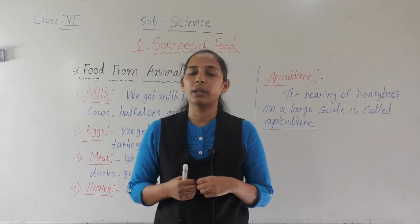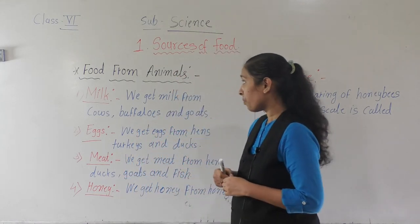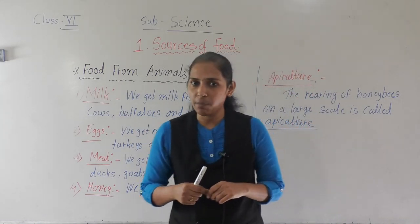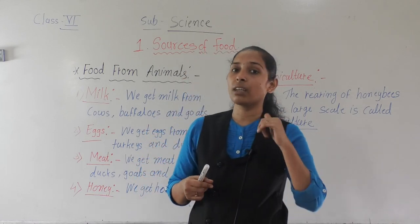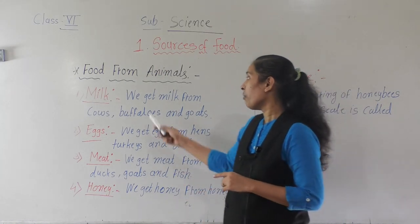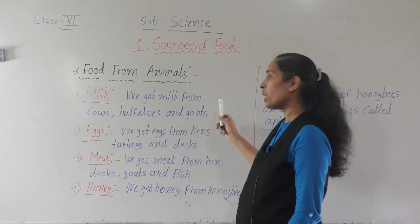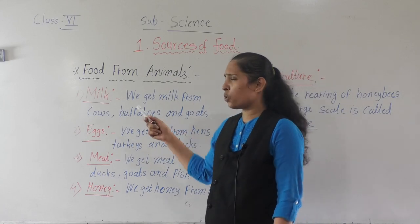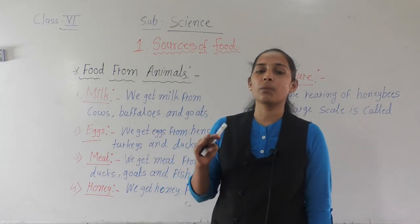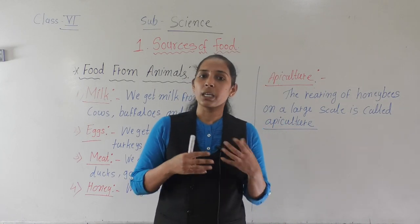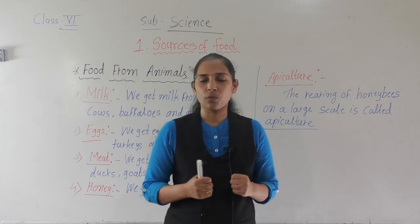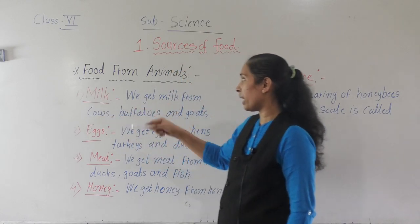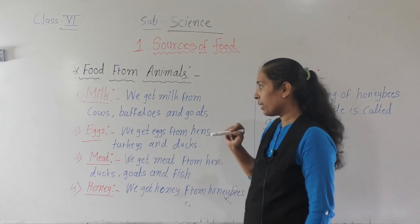First, we will discuss milk. We get milk from animals — for example, from cows, buffaloes, and goats. These are the milk-providing animals. This milk is used for several other purposes; from milk we prepare milk products like curd, ghee, butter, cheese, paneer, and ice cream. So milk is one of the food materials we get from animals.